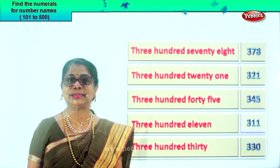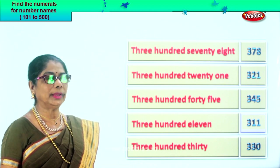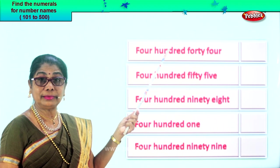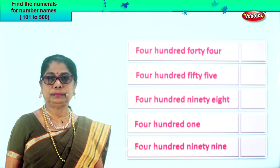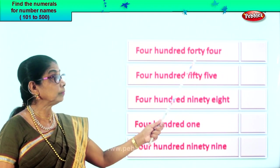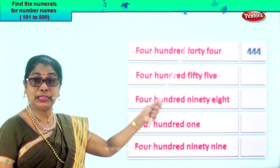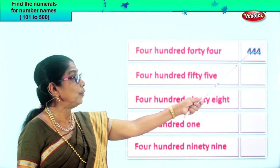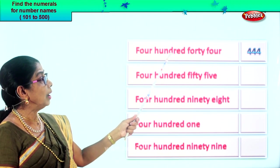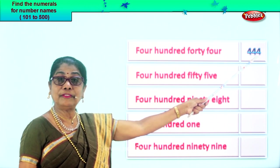Let's get on to another exercise and learn to read the number name, fill in correctly the numeral. Here we are, let's look at this. Let's read the number name: four hundred forty-four. Four in the hundred place. Forty-four is four in the tens place, four in the ones place — four, four, four. Now look: four hundred forty-four. Just as you read the number name, you fill in the numeral. Four hundred forty-four. Good.